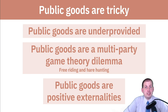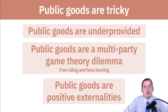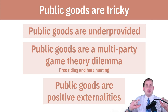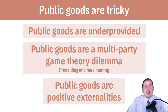At the same time, public goods generate positive externalities — there are real societal benefits when they're provided. A freeway system, national defense, and fireworks on the Fourth of July all make society better off. But they will be under-provided by the market because of free-riding incentives and misaligned payoffs — nobody wants to pay when there's no individual benefit from doing so. This is the public goods market failure problem: things that should be provided are under-provided.